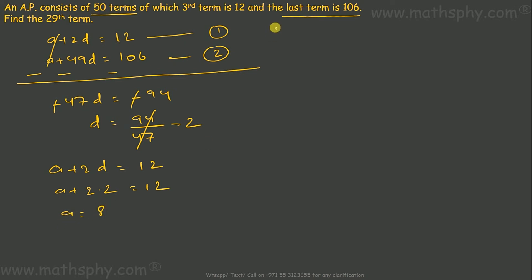So now I have first term which is 8 and d common difference is 2. It says I have to find out the 29th term, so 29th term would be a plus 28d is 8, 28 into d is 2, so 8 plus 56 which is 64. So my 29th term would be 64.